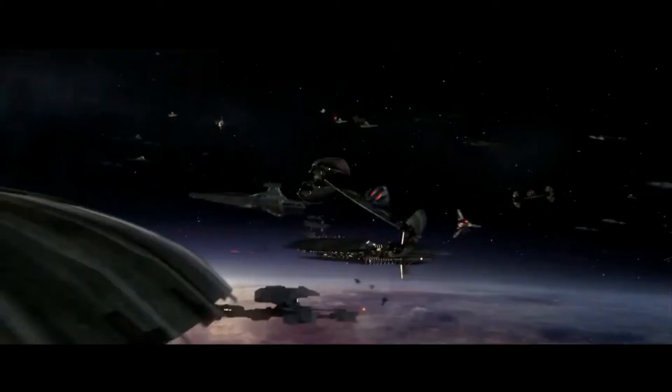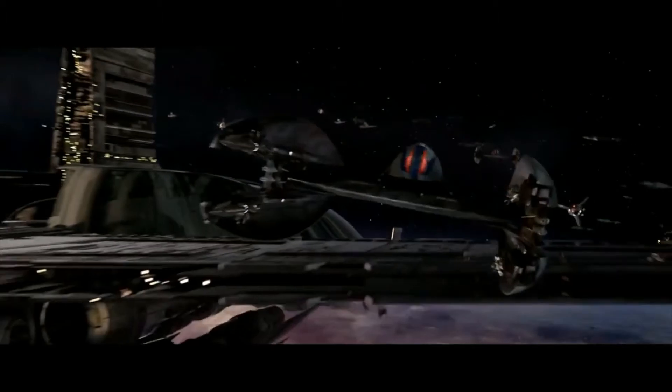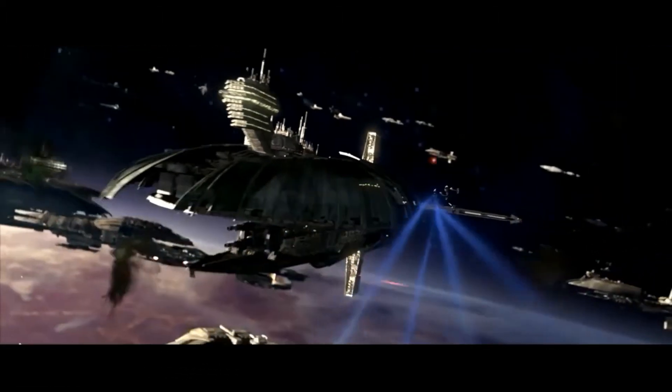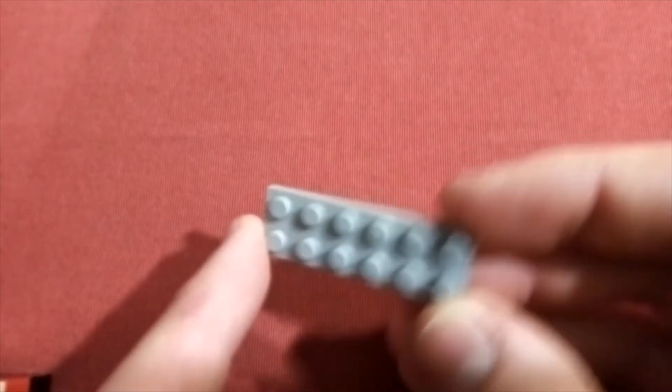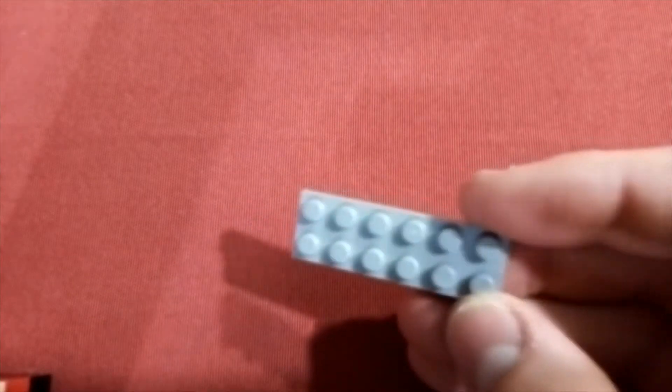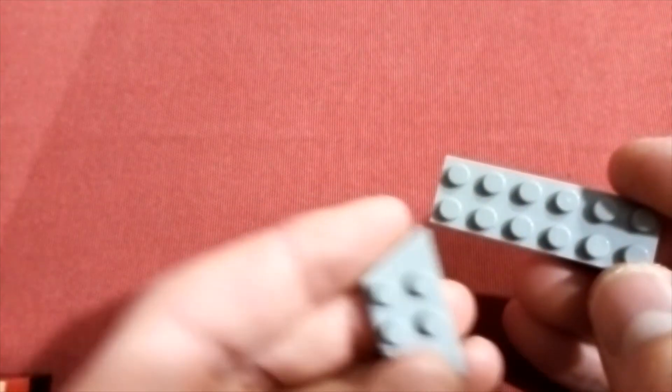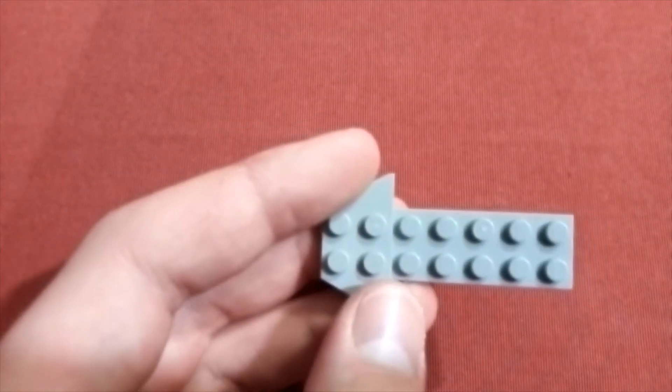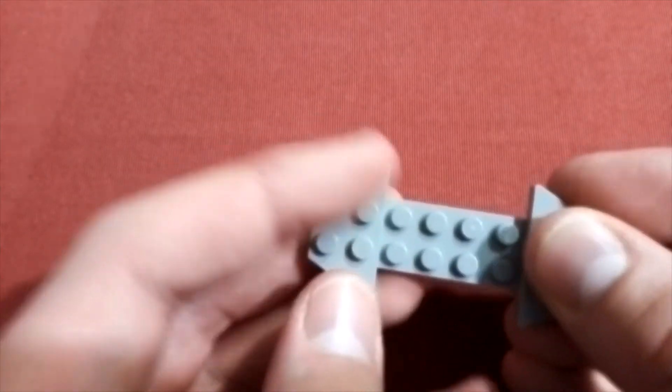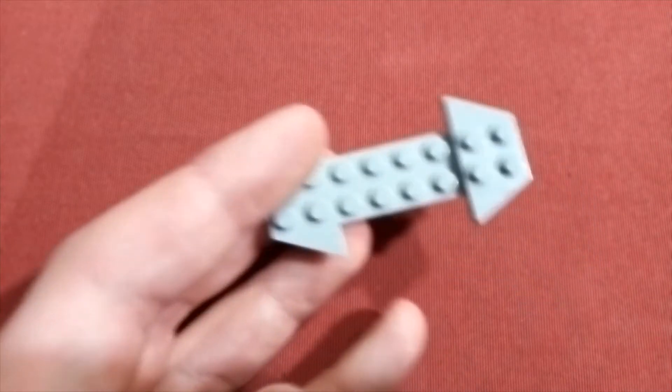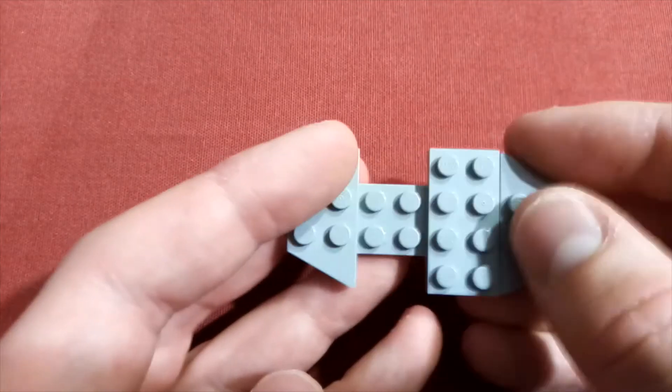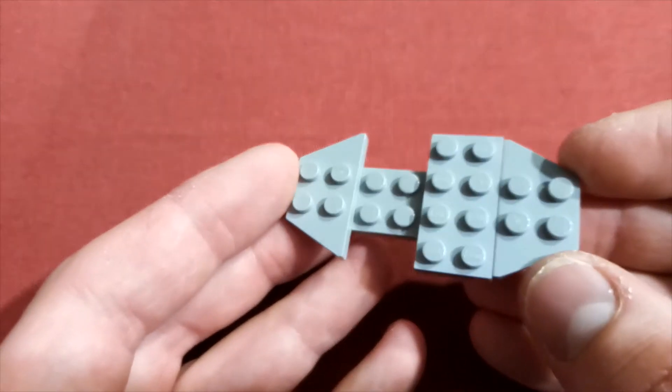Now let's get into the video. To start off, take a 2x6 light bluish grey plate and you're going to want one of these wedge plates at either end of the 2x6. Now you're going to take a 2x4 plate and put it just next to one of those wedges.